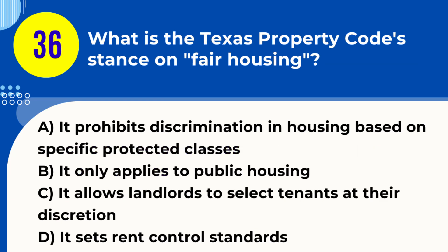Question 36. What is the Texas Property Code's stance on fair housing? A. It prohibits discrimination in housing based on specific protected classes. B. It only applies to public housing. C. It allows landlords to select tenants at their discretion. D. It sets rent control standards. Answer: A. It prohibits discrimination in housing based on specific protected classes. Explanation: The Texas Property Code aligns with federal law in prohibiting discrimination in housing based on race, color, national origin, religion, sex, familial status, or disability.